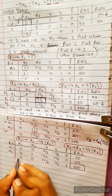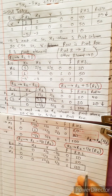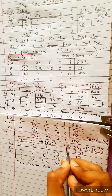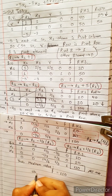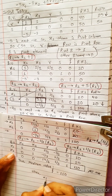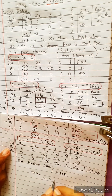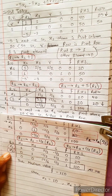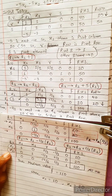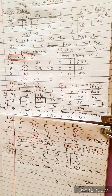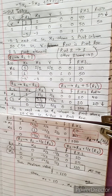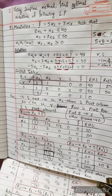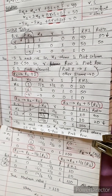Now all entries in the objective row are non-negative, so we have reached the optimal solution. Therefore, the maximum value of F is 110, achieved when x1 equals 10 and x2 equals 20. That is our final answer. Thank you and bye-bye — let's try another question.